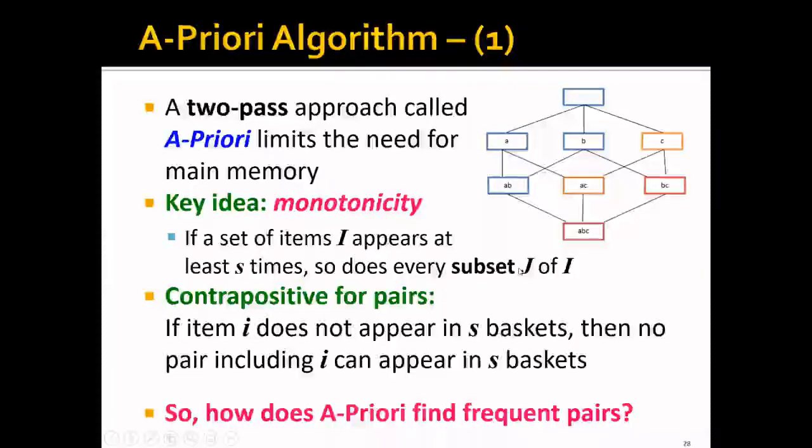And the subset support can only be larger than S. And in practice, we usually use a contrapositive version of this for the pairs. And it states that if the item does not appear in S baskets, then no pair including I can appear in S baskets. And it basically translates to if the item I has support lower than S, then any pair including I has support lower than S.